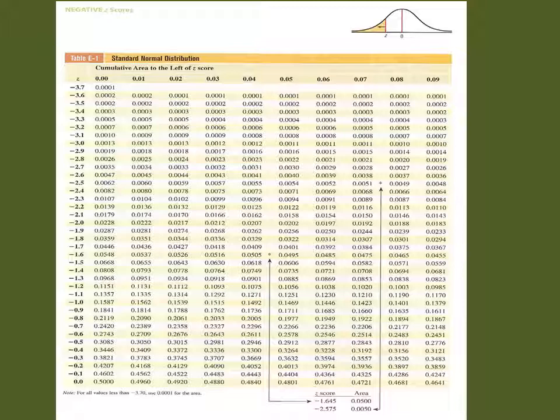You might have noticed that the table only has the positive z-scores. Because of the sheer size of the table, it was necessary to split it in two parts. Here is the negative z-score table. To find area values of z-scores in this table, you proceed in exactly the same way.